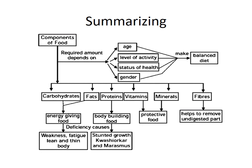This is the whole summary of this chapter. Different components of foods are required depending upon age, level of activity, health, and gender. Carbohydrates and fats are energy giving foods, proteins are body building foods, vitamins and minerals are protective foods, and fiber and water help to remove undigested parts and clean our body. Deficiency of these components can lead to different diseases, and their excess can also be harmful, so we should balance these components in our food to lead a healthy and balanced life.